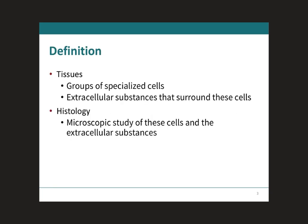Remember when we discussed in module one, learning outcome number two, the level of body organization, and then we talked about tissues there. It was the level right after the cellular level, where the first level was the chemical level, where the atoms came together to form molecules, and then the molecules came together to form the cells, and the cells came together to form the tissues. This is the level we are at right now for this module.